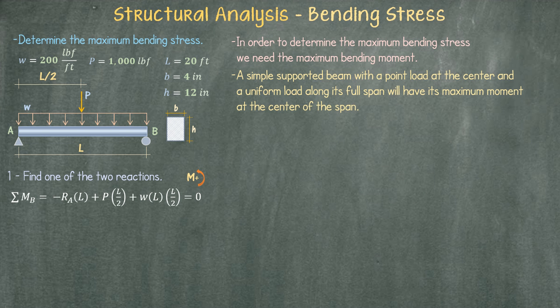We now need to convert our uniform load along the full span to an equivalent point load. We do this by multiplying our uniform load by the full span. The location of this new point load will be at the center of the span. Then we will multiply this point load by the distance to point B which is half of the span. And all this is equal to zero. We then solve for the unknown reaction at point A.